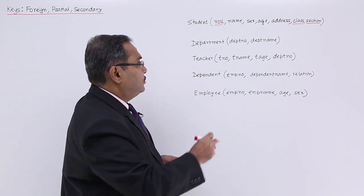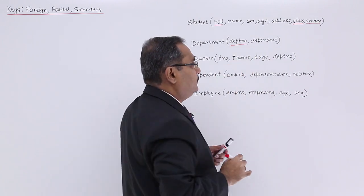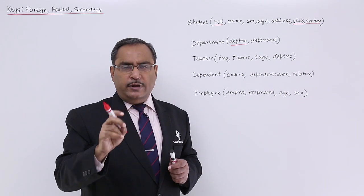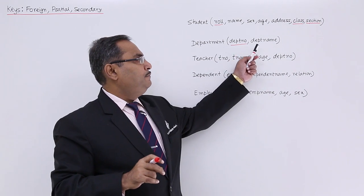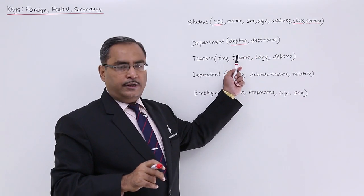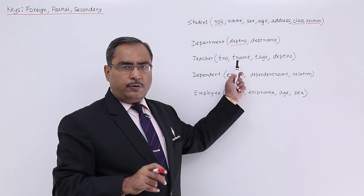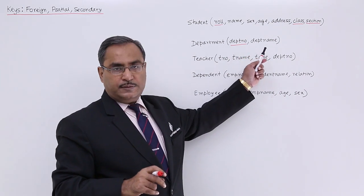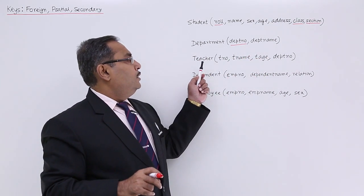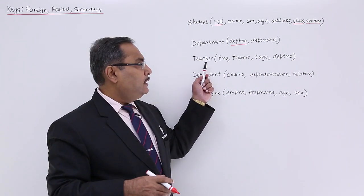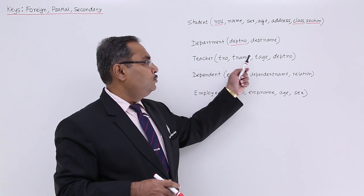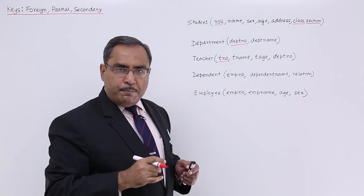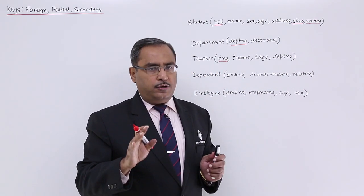For each and every department, department number is underlined because using this department number we can uniquely identify each department — say D1 Physics, D2 Chemistry, D3 Computer Science, D4 Biology. Now, the teacher schema has four attributes: teacher number (TNO) is the primary key since it uniquely identifies each teacher.